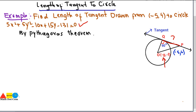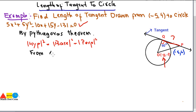By Pythagoras theorem, we have: hypotenuse² = base² + perpendicular². We use Pythagoras theorem because we have a right angle triangle — you can only use it in that case. In triangle OQP, the 90-degree angle is at Q, so OP is the hypotenuse. Therefore: OP² = OQ² + QP².